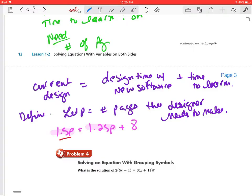I'm not going to use the 1.5P. I'm going to use the 1.25P because that'll put the constant by itself on the right expression and the variables by themselves in the left expression. So I'm going to subtract 1.25P from both sides.